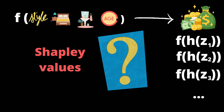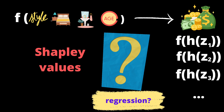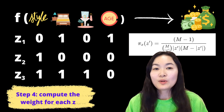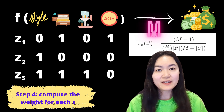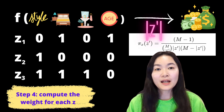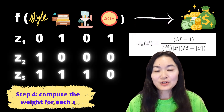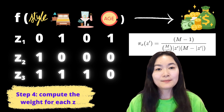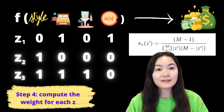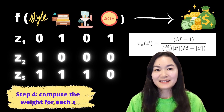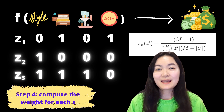Since Shapley values are additive, it is natural to think that we can fit the Shapley values into a regression model. But each coalition Z may need to be weighted differently, so we need to compute the weight for each Z. Here's the equation for the weight, where M is the number of features and the one-norm of Z' is the number of present features in Z'. Features with fewer or more present features have more weight because they may provide more information for a specific feature. In this case, Z2 and Z3 will have more weight than Z1, and Z2 and Z3 actually have the same weight.